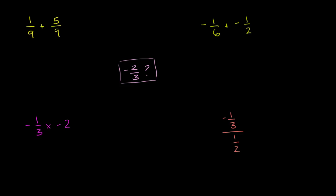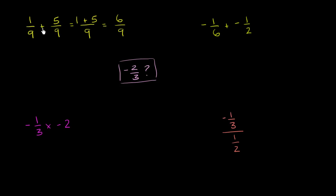Let's go to this first expression right over here. I have 1 ninth, and I'm going to add to that 5 ninths. So how many ninths am I going to have? Well, I had 1 ninth, now I'm adding 5 ninths, so I'm going to have 6 ninths. If I have 1 of something and 5 more of that same something — in this case a ninth — 1 ninth plus 5 ninths is 6 ninths.